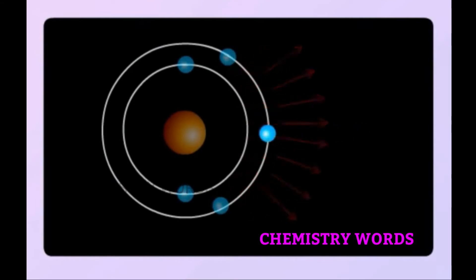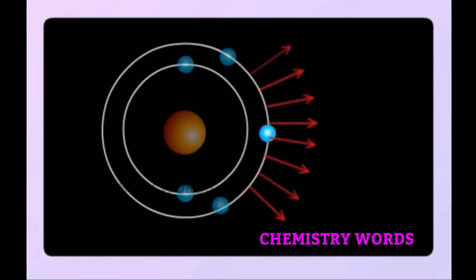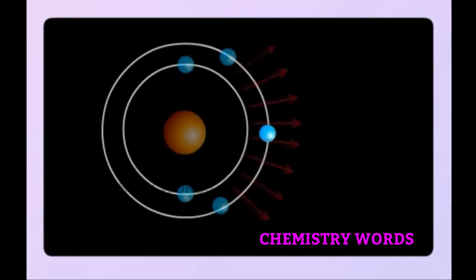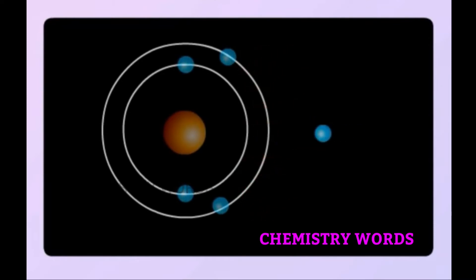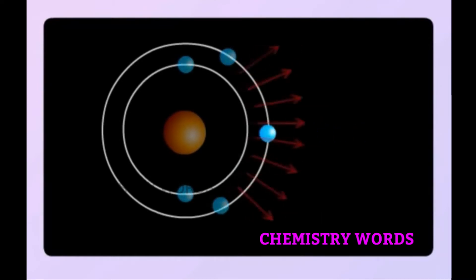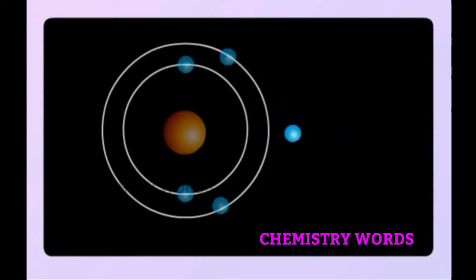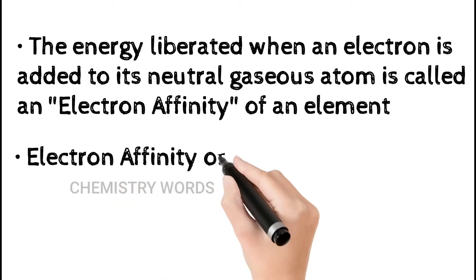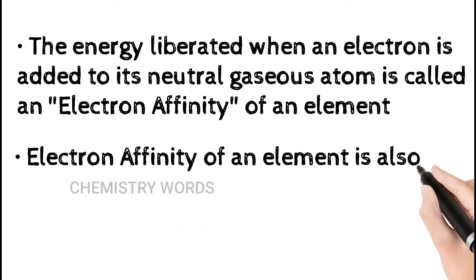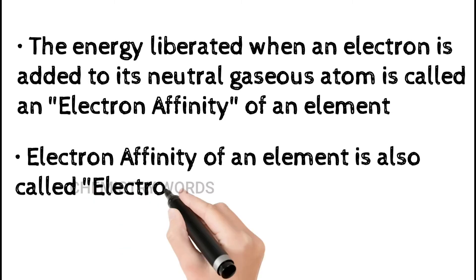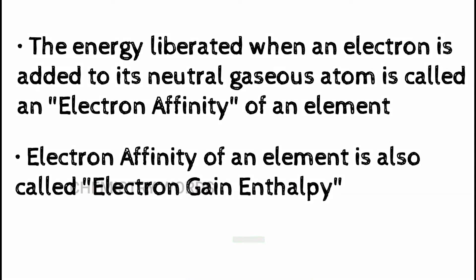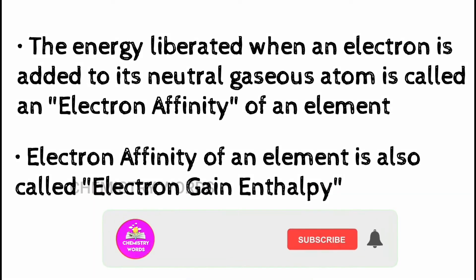As shown in this diagram, in the K shell there are two electrons, and in the L shell there are two more electrons. If one more electron is added to that atom, some amount of energy will be released by that atom. This energy is generally known as electron affinity or electron gain enthalpy.